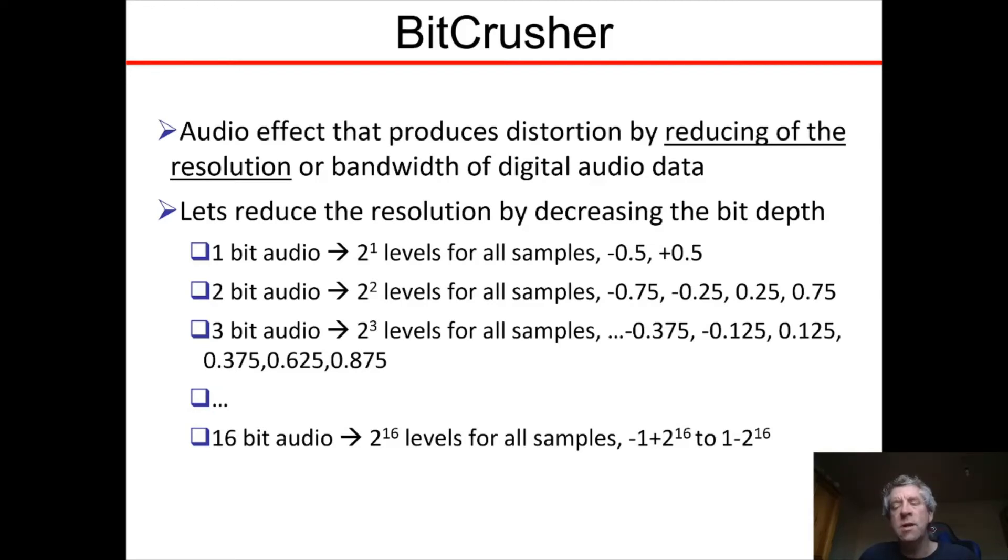In between each level, that range is 2 over 2 to the n. Between -0.5 and 0.5 here we have 2 over 2, here we have 2 over 4, or 1 half between -0.75 and -0.25, and so on.